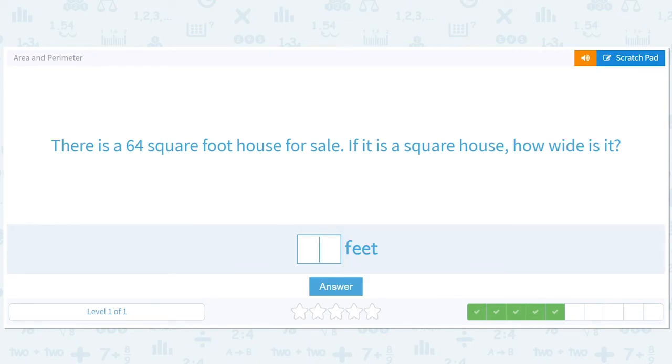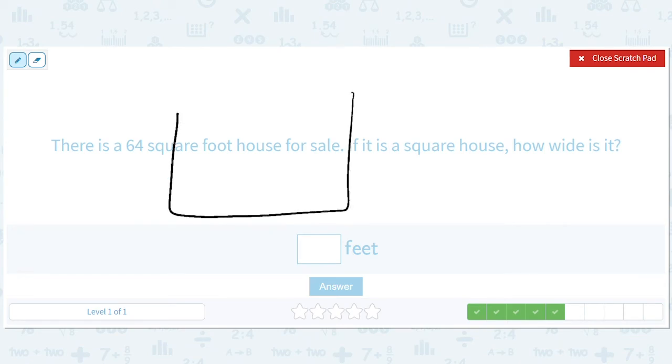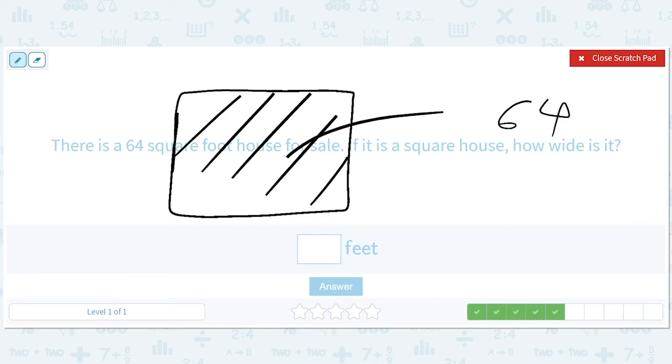There is a 64 square foot house for sale. If it is a square house, how wide is it? Okay. So by that, we mean the actual base of the house, right? A house is a 3D object, but the floor could be a 64 square foot house. So we're just talking about the floor here. So this is 64 square feet, also a very, very small house. How wide is it?